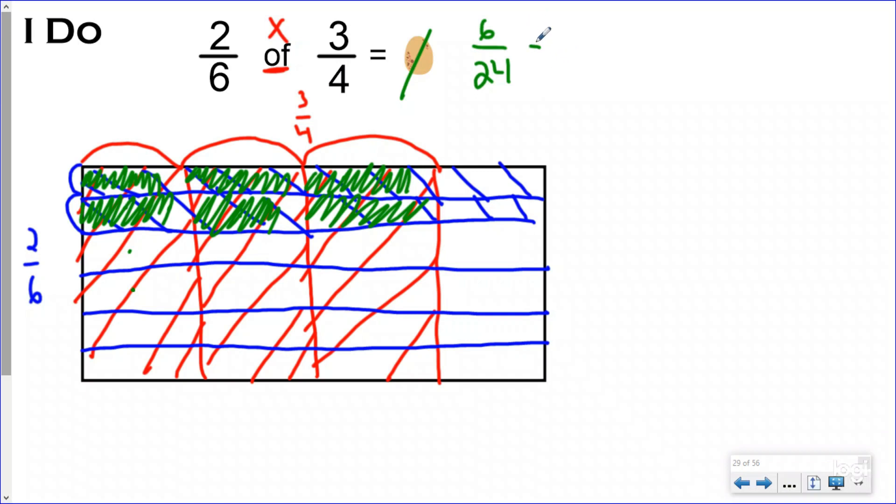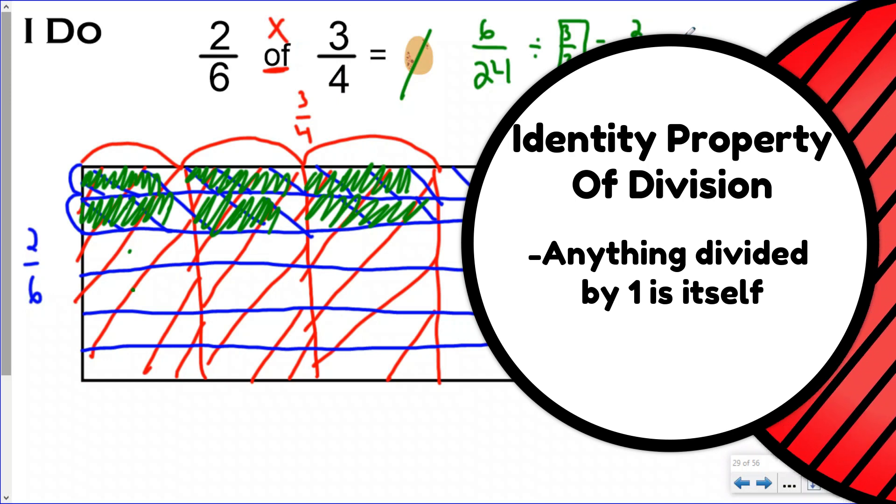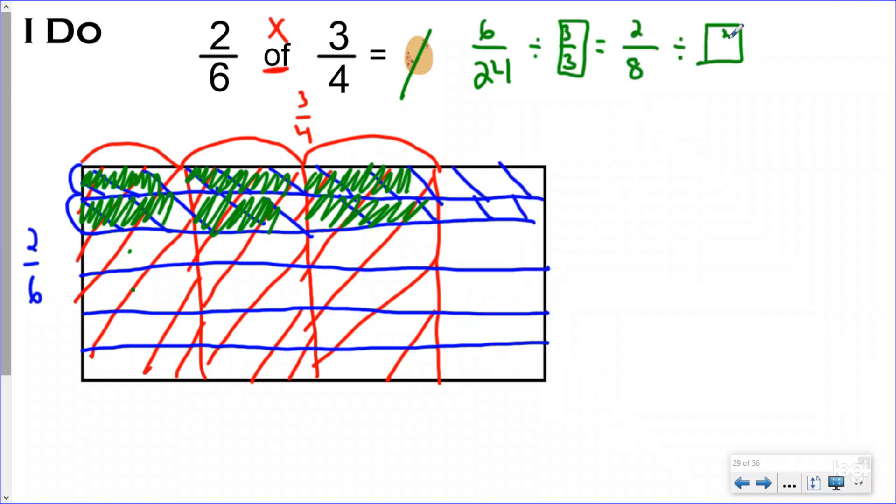And as always, I see that these are both even numbers, but they're both also divisible by three. So I want to simplify using my identity property of division, and I see again that both of these are even. So I'm going to go one more time dividing it by two over two, and your answer simplified is one-fourth. So if you notice what I did, I again wrote one of the fractions up top, I split my area model or tape diagram vertically, I took the other fraction to the side, and I split it horizontally, and then I made sure that I counted the pieces that I shaded in twice.